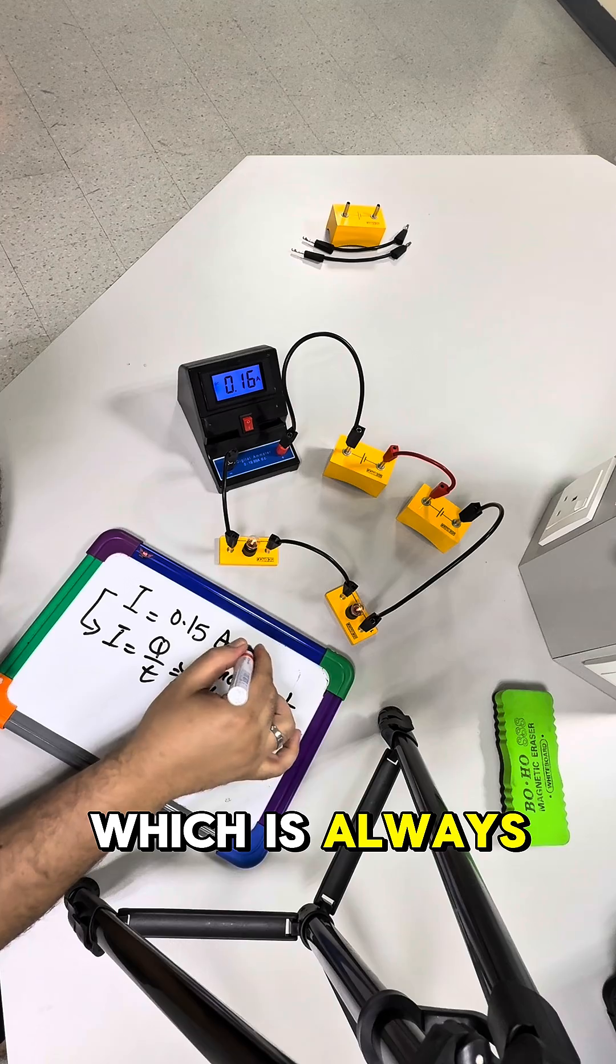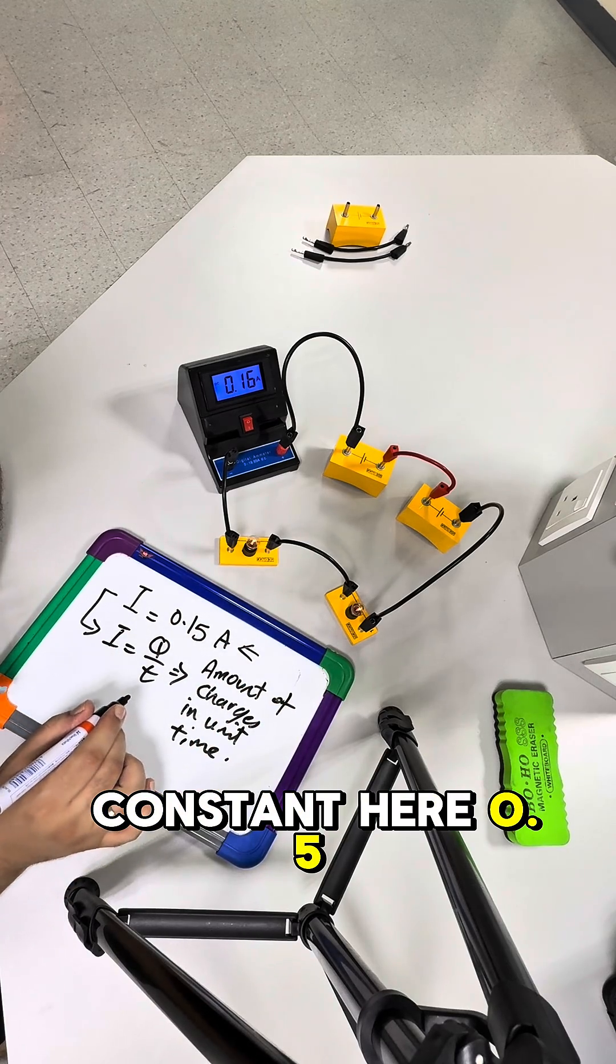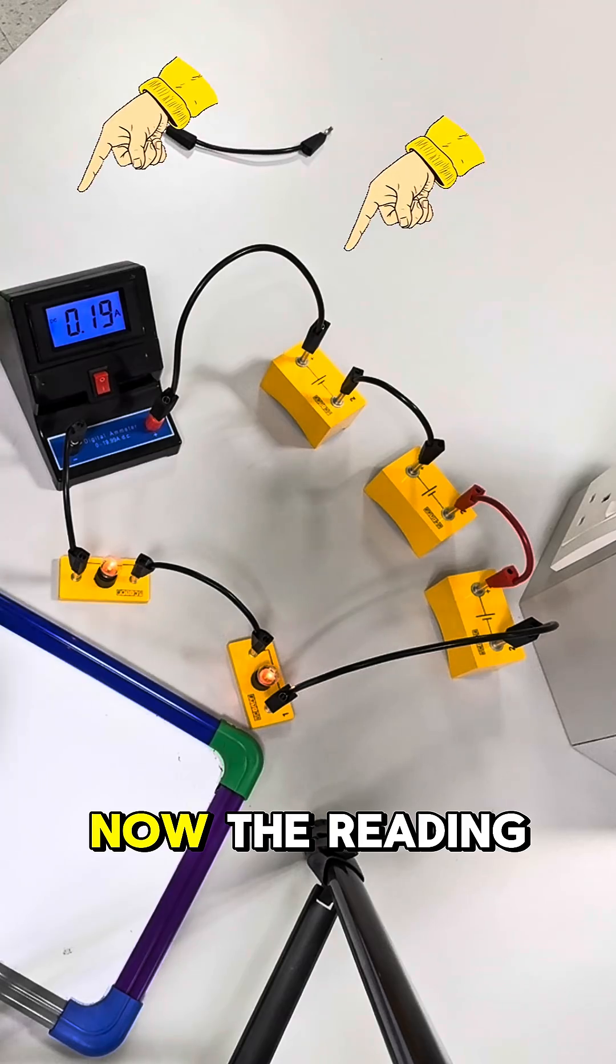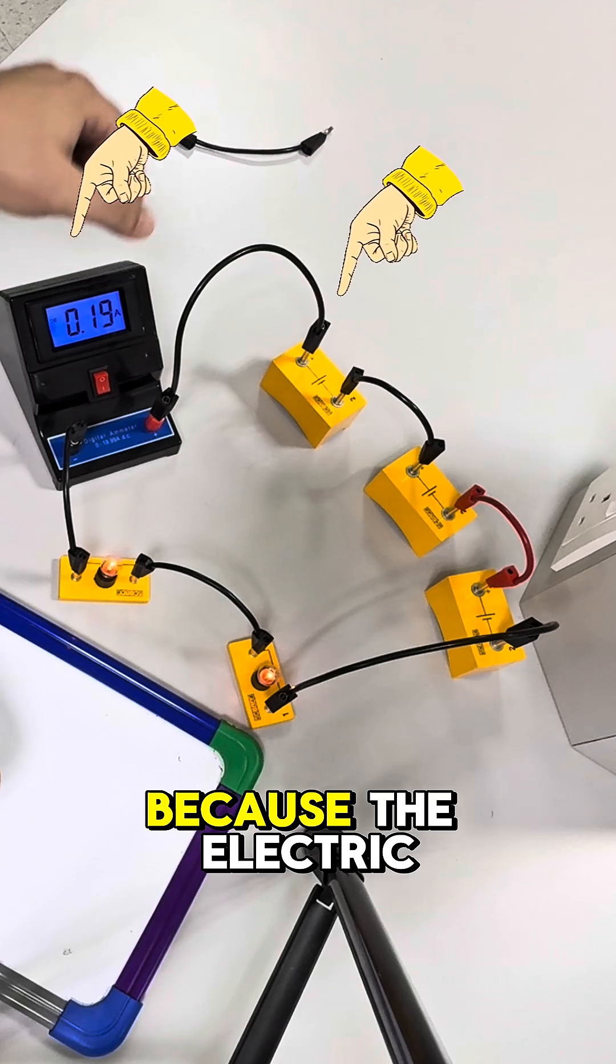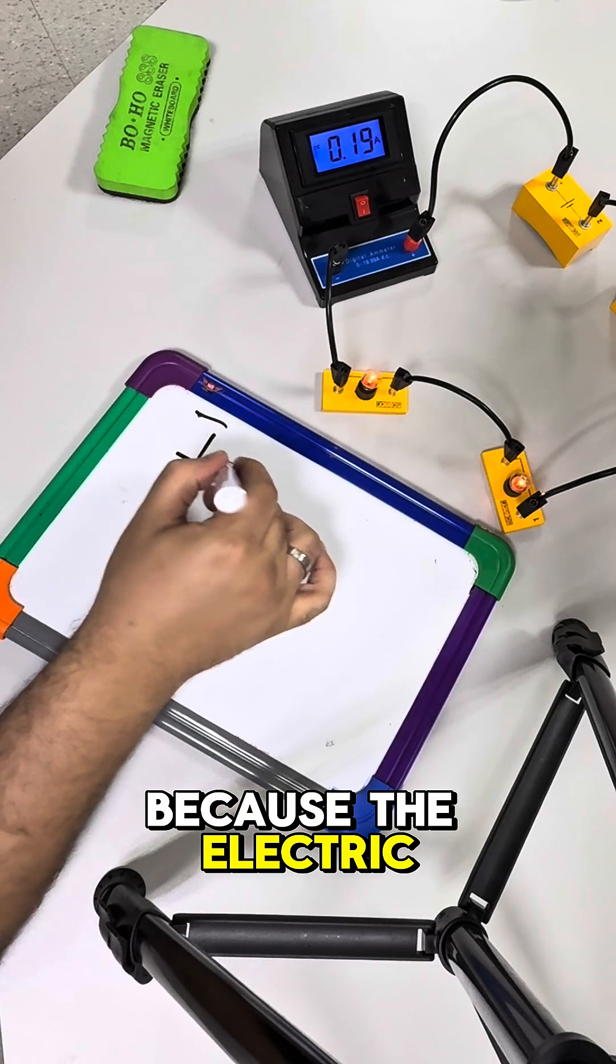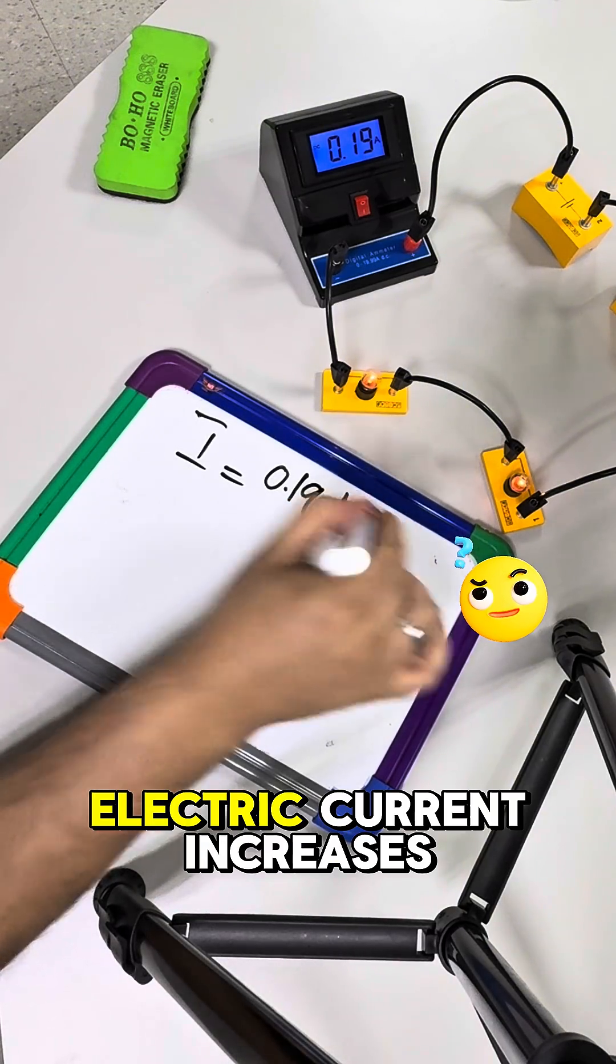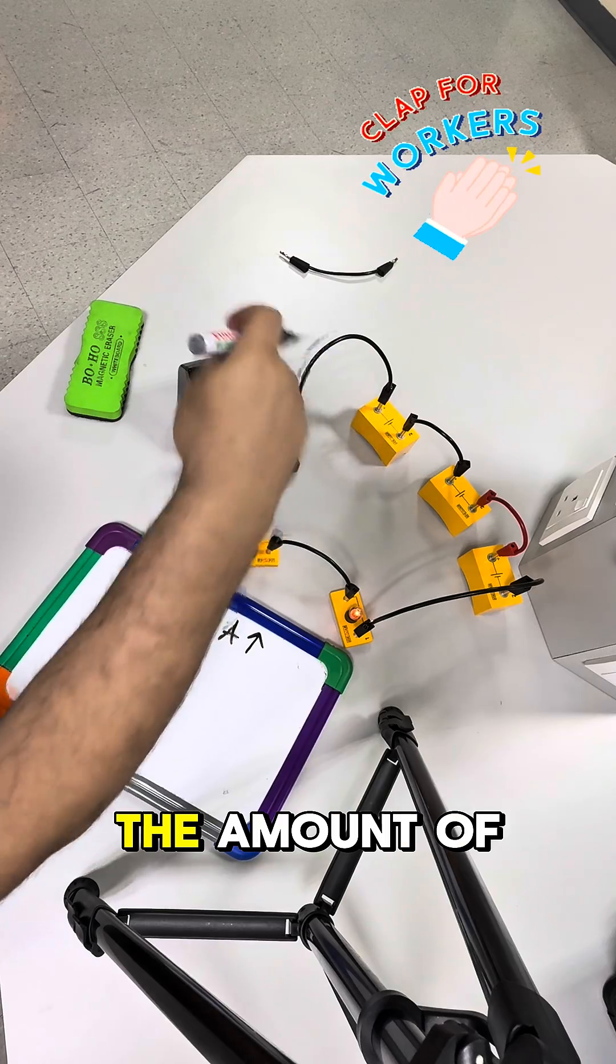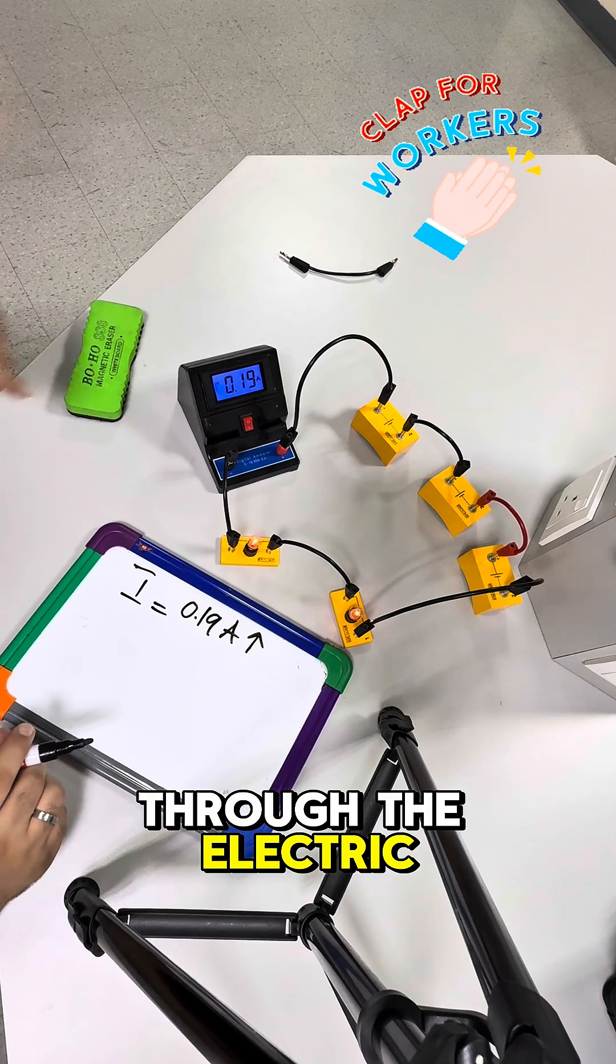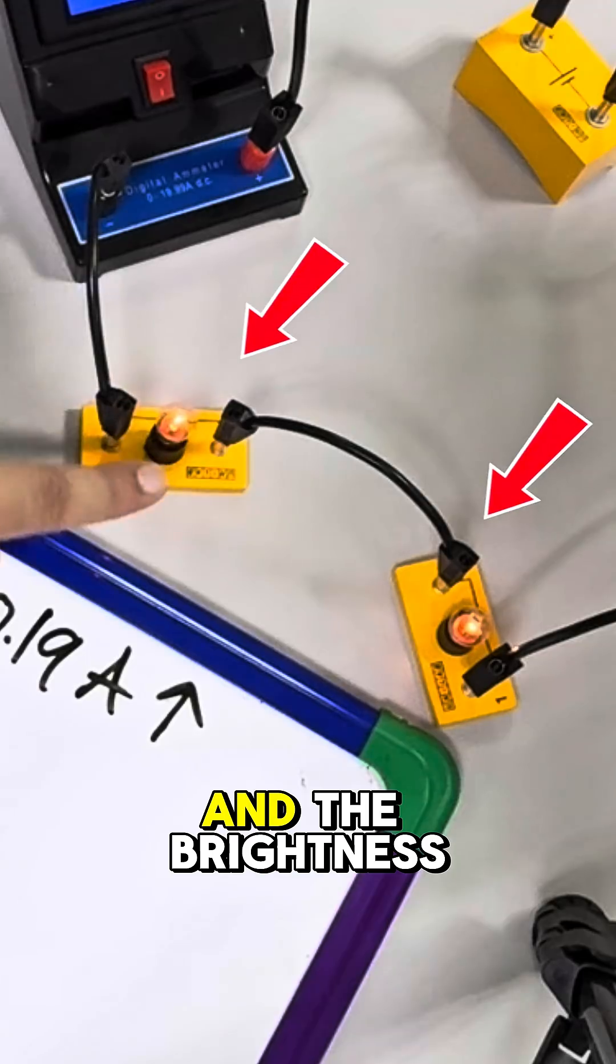Now the reading is slightly higher because the electric current here is 0.19 ampere. What does it mean? If the electric current increases, it means the amount of charges passing through the electric circuit increases as well.